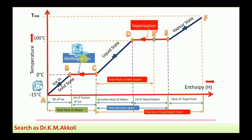Beyond point C, if you start heating, the temperature of the water increases while it remains in the liquid state at atmospheric pressure. Starting from 0 degree Celsius, the water reaches the saturation temperature of 100 degree Celsius. The amount of heat added to heat water from 0 degree Celsius to 100 degree Celsius is called the sensible heat of water — it is the heat required to increase the temperature of 1 kg of water from 0 to 100 degree Celsius.